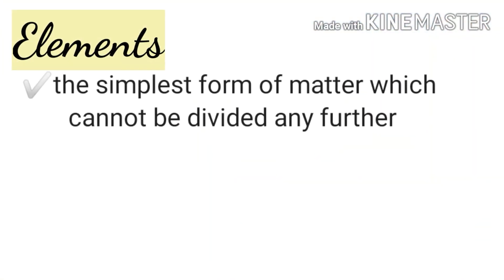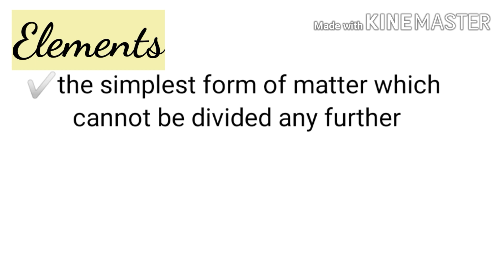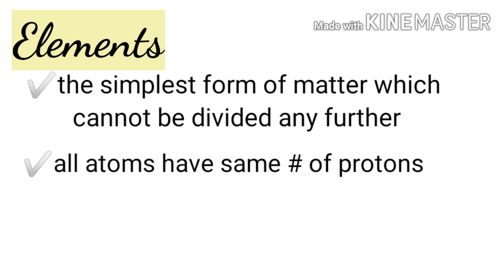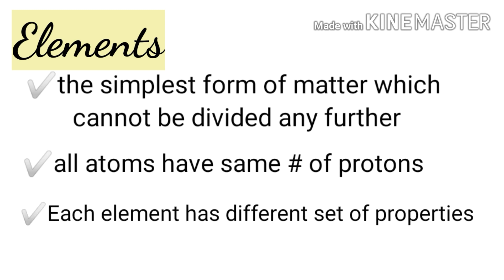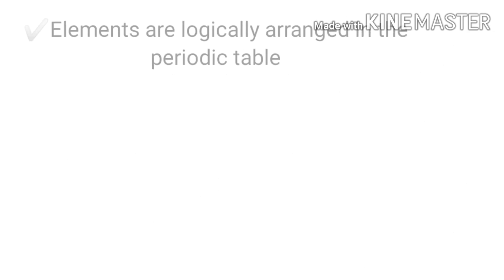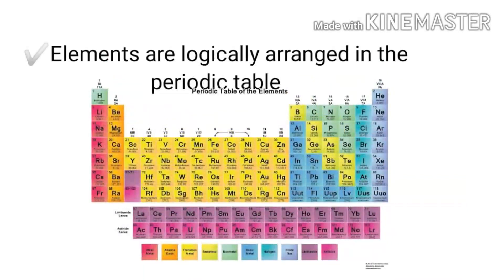Elements. It is the simplest form of matter which cannot be divided any further. All atoms have the same number of protons. Each element has a different set of properties. Elements are logically arranged in the periodic table.